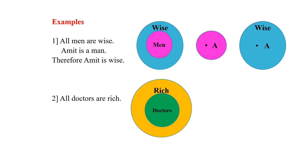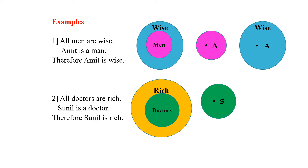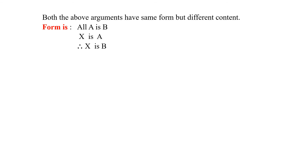Let us take another example. All doctors are rich. In the class of rich, we have the class of doctors. Sunil is the individual who belongs to the class of doctors. Therefore, you conclude that Sunil is rich. The content of this argument is the wider class 'rich,' the narrow class 'doctors,' and the individual 'Sunil.' Both these arguments have different content but are of the same form: All A is B; X is A; therefore, X is B — where A and B are classes and X is the individual.